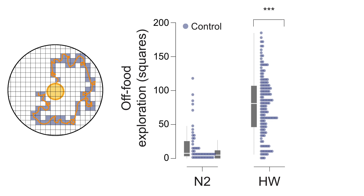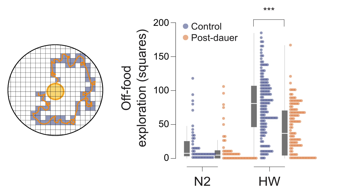Other wild isolates leave a patch of bacteria more often, and the most exploratory strain described was the Hawaiian CB4856 strain. When we did our experiments comparing the N2 domesticated strain with other wild isolates including the Hawaiian wild isolate, our results showed that post-dauer Hawaiians leave the lawn less and when they do leave the lawn they explore less area. It seems wild strains like the Hawaiian strain have this long-term plasticity in foraging behavior in response to going through dauer, whereas it was absent in the domesticated N2 strain.